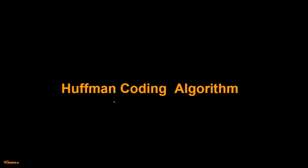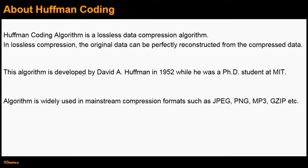Hello friends, today let's look at the Huffman coding algorithm. The Huffman coding algorithm is a lossless data compression algorithm. In lossless data compression, the original data can be perfectly reconstructed from the compressed data — there is no loss of the original data. Huffman coding algorithm was developed by David Huffman in 1952 while he was a PhD student at MIT. This algorithm is widely used in mainstream compression formats such as JPEG, PNG, MP3, etc.